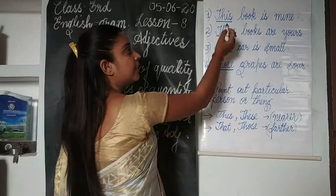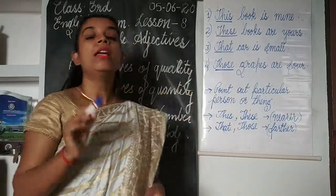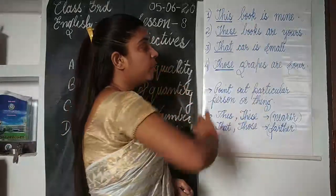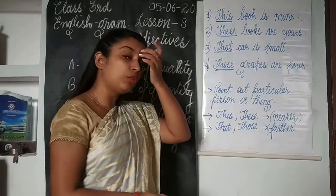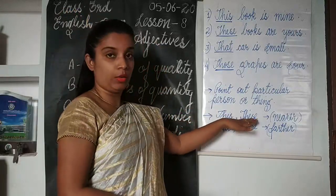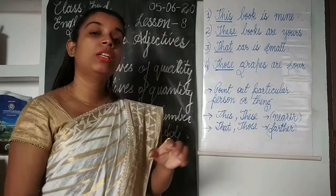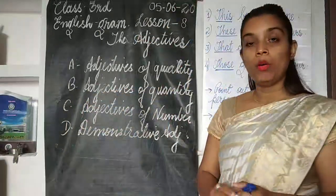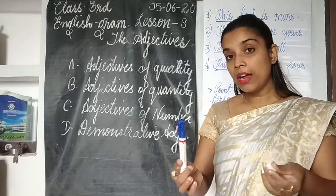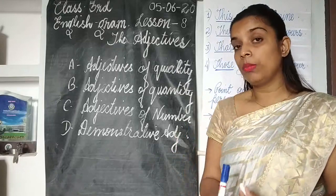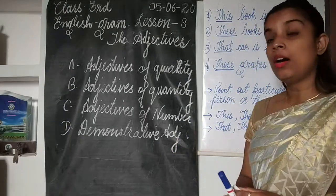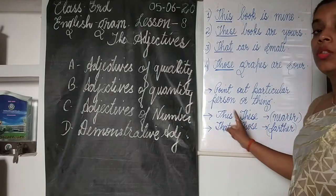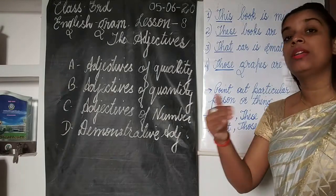In these four sentences, this, these, that, and those are demonstrative adjectives because they are pointing out at persons or things. One more thing: 'this' and 'these' are used to point out persons, places, animals, or things which are nearer to the speaker — for example, 'this pen' or 'this chalk.' Remember, 'this' is used for singular and 'these' is used for plural.